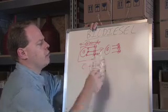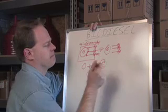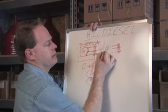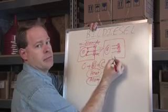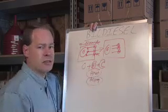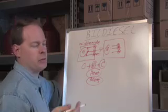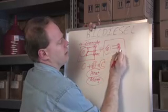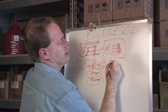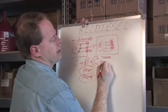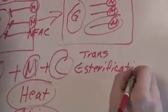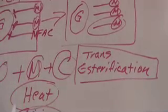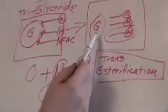So what I get when we're done with this is I'm going to have some glycerin and I'm going to have three fatty acid chains connected to some methanol. The technical term for this, which really doesn't matter, but some people like to know about it, is called transesterification. That's the process of moving from this to that.